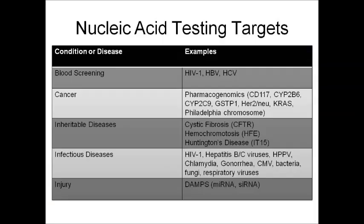So how do we identify specific nucleic acid targets? Today we perform nucleic acid testing specific to conditions, diseases, and organisms. For blood screening we can look for HIV-1, hepatitis B virus, or hepatitis C virus. For cancer, we can do pharmacogenomics — looking at CYP2B6, CYP2C9, or the Philadelphia chromosome. We can also look at inheritable diseases such as the CFTR mutation for cystic fibrosis or Huntington's disease, infectious agents including bacteria like chlamydia and gonorrhea, fungi, and injury markers called DAMPs — Damage-Associated Molecular Patterns — including microRNAs and small silencing RNAs.